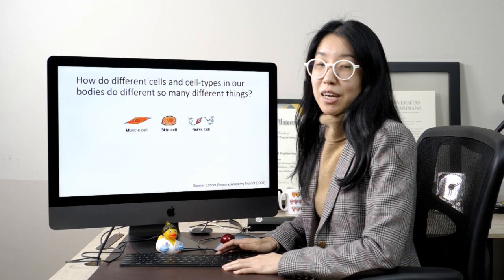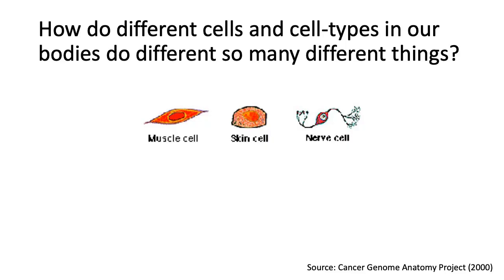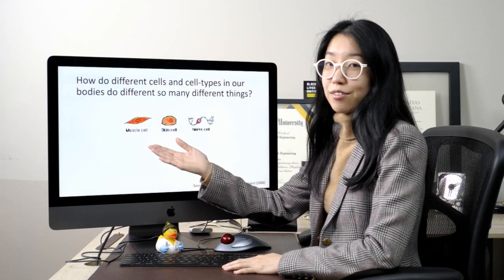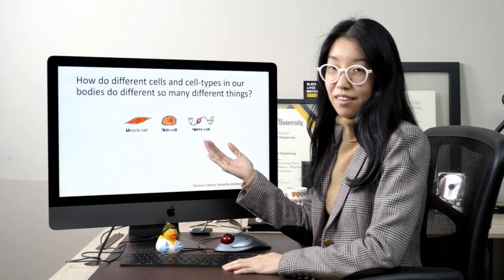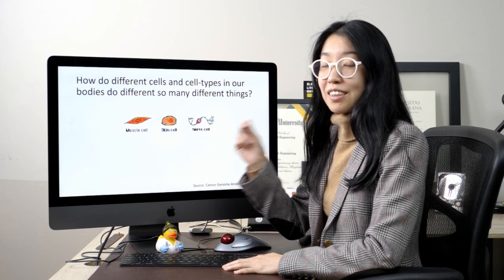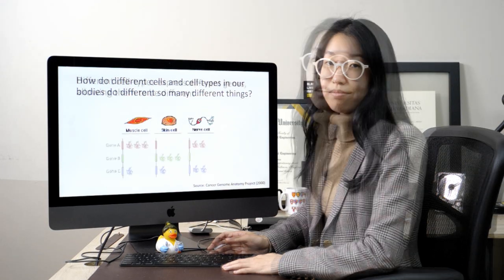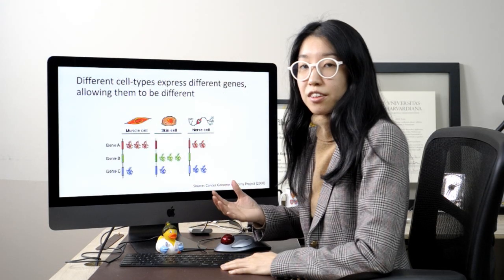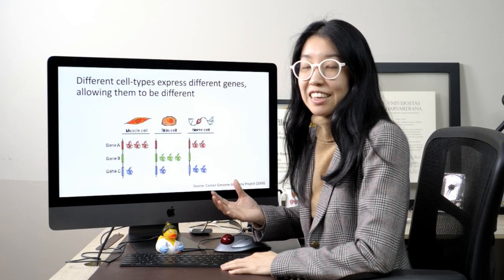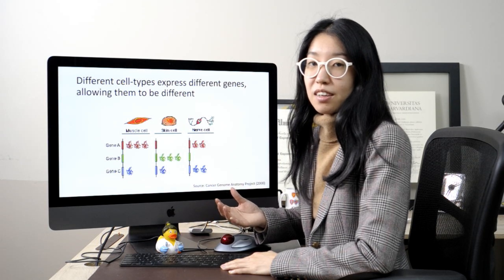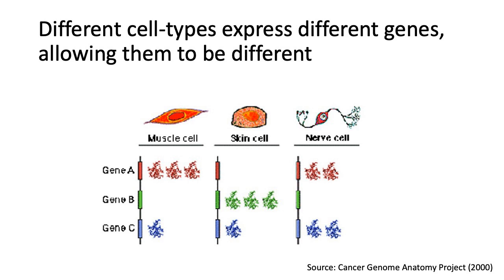The central research question in my lab is how do different cells and cell types in our bodies do so many different things? A muscle cell looks very different from a skin cell or a nerve cell — they exhibit phenotypic differences, but they also display many functional differences. These phenotypic and functional differences are molecularly encoded, in part based on coordinated patterns of gene expression. That is, different cell types express different genes, allowing them to do different things.